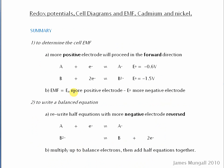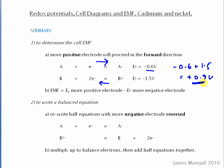To summarize: to determine the cell EMF, the more positive electrode proceeds in the forward direction and the more negative in the reverse direction. For example, if 0.6 is more positive it goes forward, and the more negative goes in reverse. To work out the overall EMF, take the more positive electrode potential and subtract the more negative — a double negative gives plus 1.5, so the result would be plus 0.9 volts. This should always come out as a positive number.